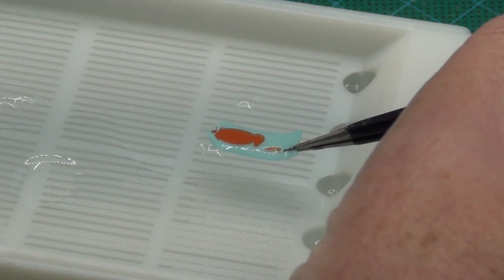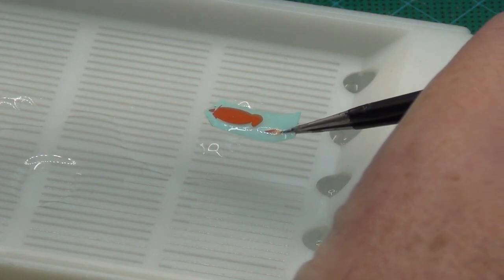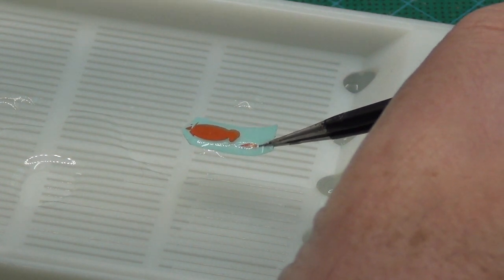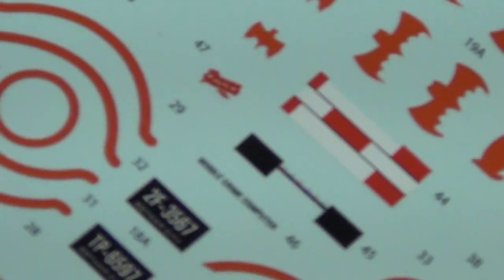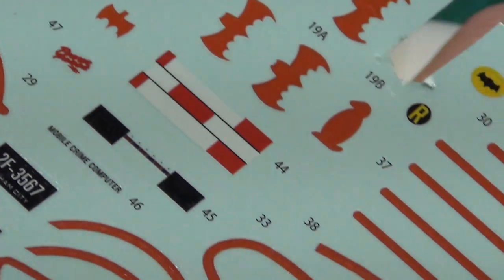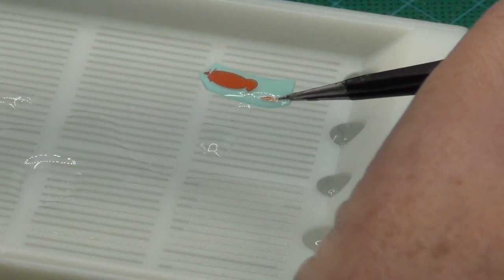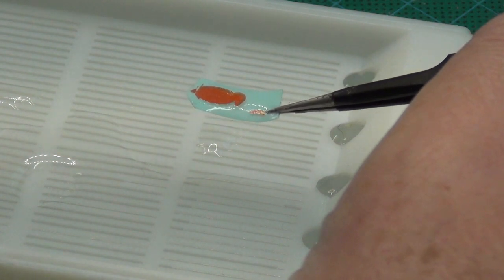Especially on a kit like the Batmobile that has so many decals that you need to put on. Look at them, I mean it's a ton of them. To have a brand new kit with decals that fall apart like that, and this is a replacement set, don't forget, not the original set.